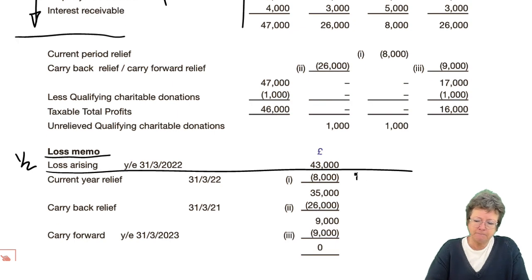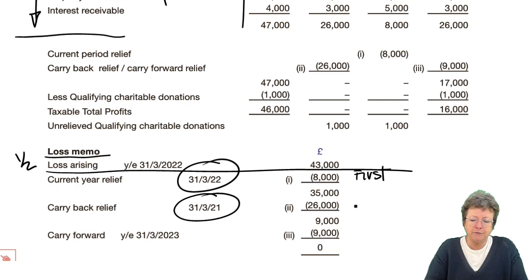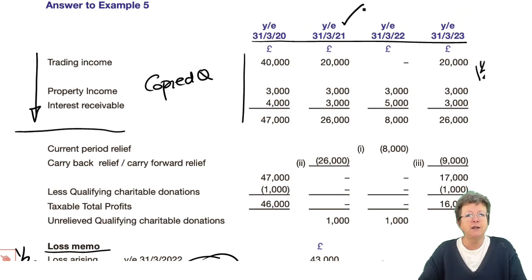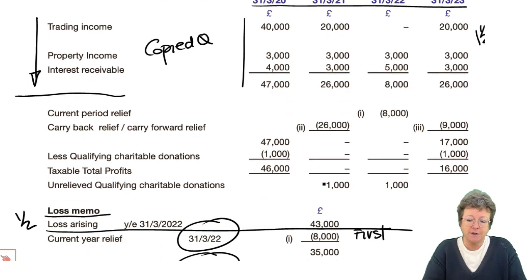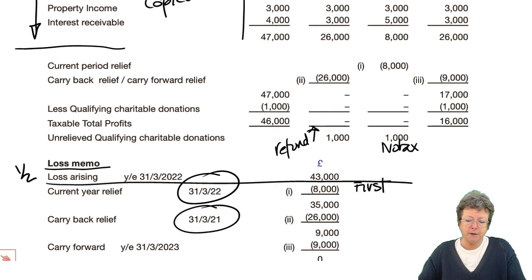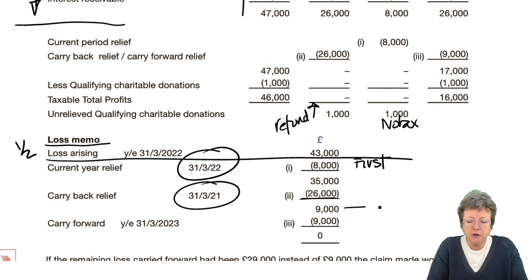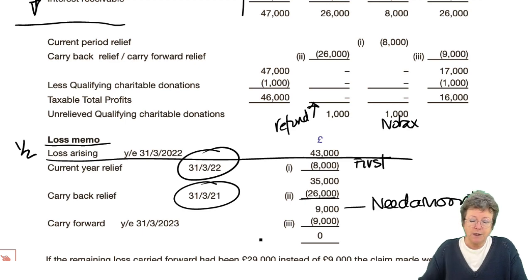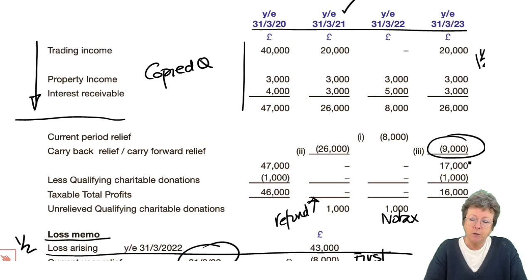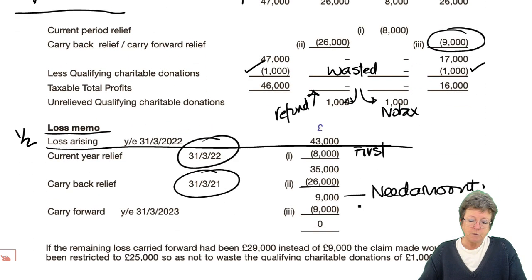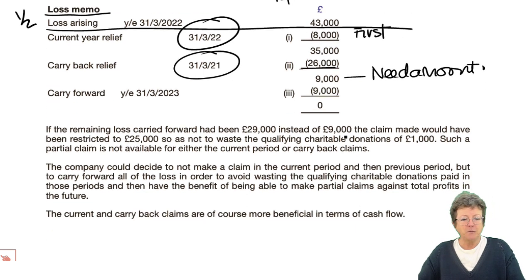So, firstly we do a current year relief claim for this year end, because you must do that before the carry-back relief. Now, check — is it 12 months? Yes it is. Therefore, we can carry back 12 months and fully relieve this, getting a refund and paying no tax here. We've done a subtotal to know what's left before we carry forward. We carry forward 9,000 against total profits here, reducing profits down to 17,000. We've got our QCDs — the others are wasted, make a note of that. Finalise everything. Well done — we've got to the end of the chapter.